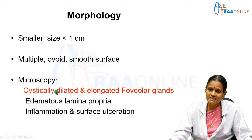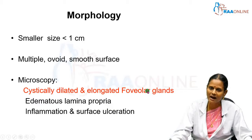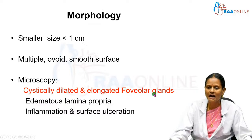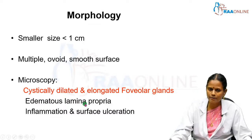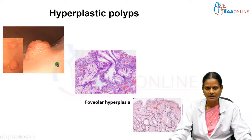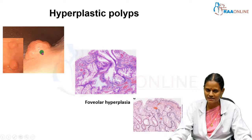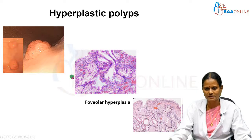Microscopically, they have cystically dilated glands with elongated and hyperplastic foveolar glands. Inflammatory or hyperplastic polyps are characterized by foveolar gland hyperplasia, edematous lamina propria with inflammation, and surface ulceration. This is an endoscopic and gross view of the hyperplastic polyp — it is usually a sessile polyp, very small in size, ovoid, and with a smooth surface.